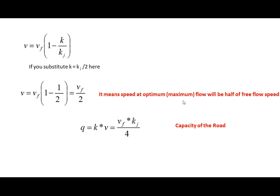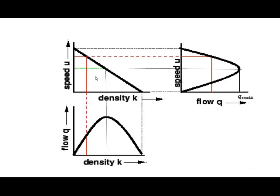So speed at maximum flow will be half of the free flow speed, and the flow at that point — Q = K × V — will be (K_J / 2) × (V_F / 2) = V_F × K_J / 4. That is the capacity of the road.